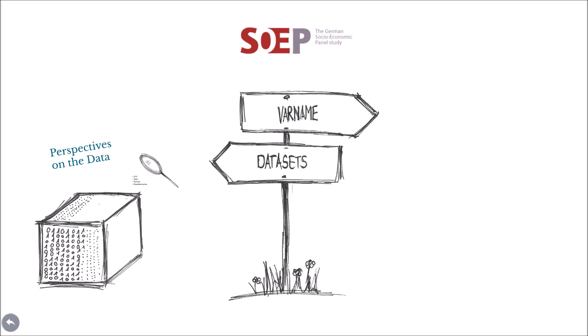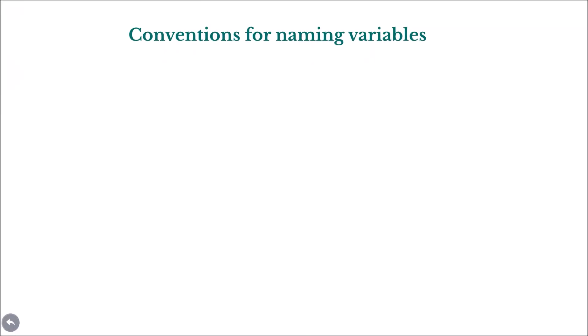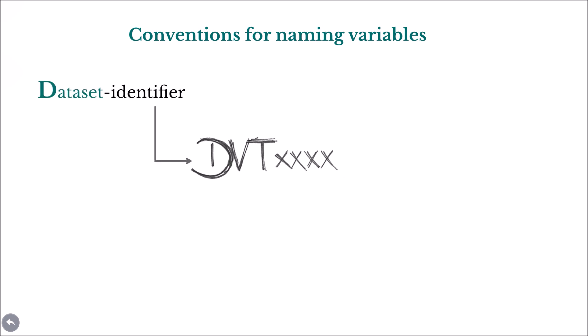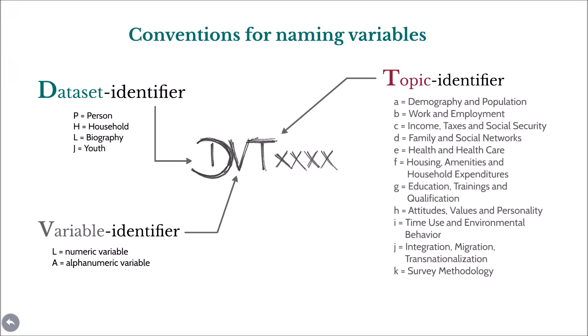Let's now take a look at some of the conventions for naming variables. In the long format, all non-generated variables are named according to the following scheme. The first digit is a dataset identifier: P stands for person, H for household, L for biography datasets, and J for youth. The second digit tells you the type of variable: L stands for numeric variables and A for alphanumeric variables. The third digit gives information about the broader topic of the variable — for example, A stands for demography and population, and H stands for attitudes, values, and personality. We find the complete list of topics in the SAP companion.